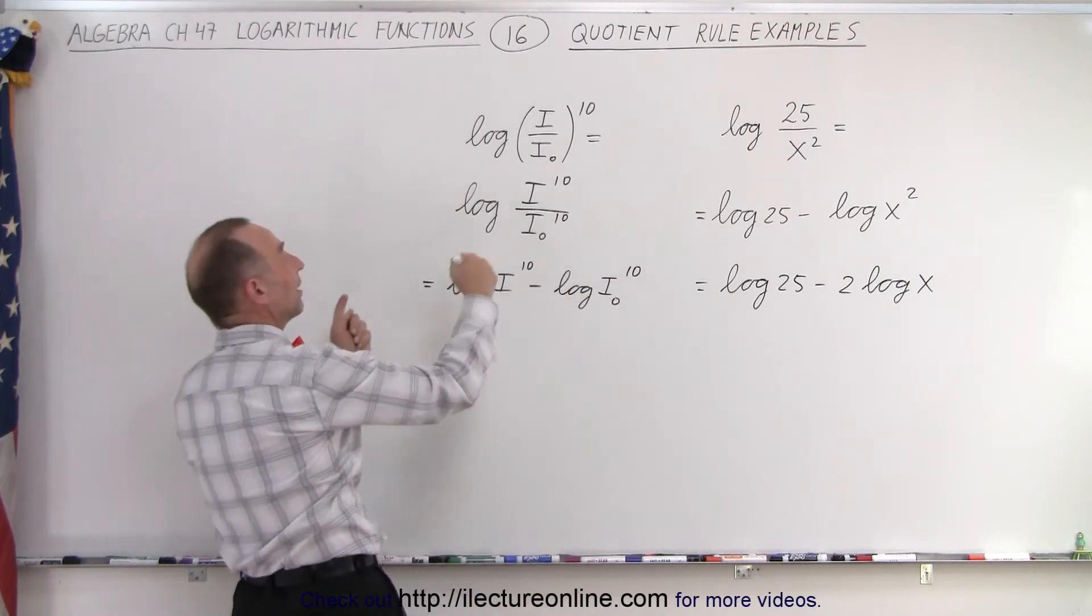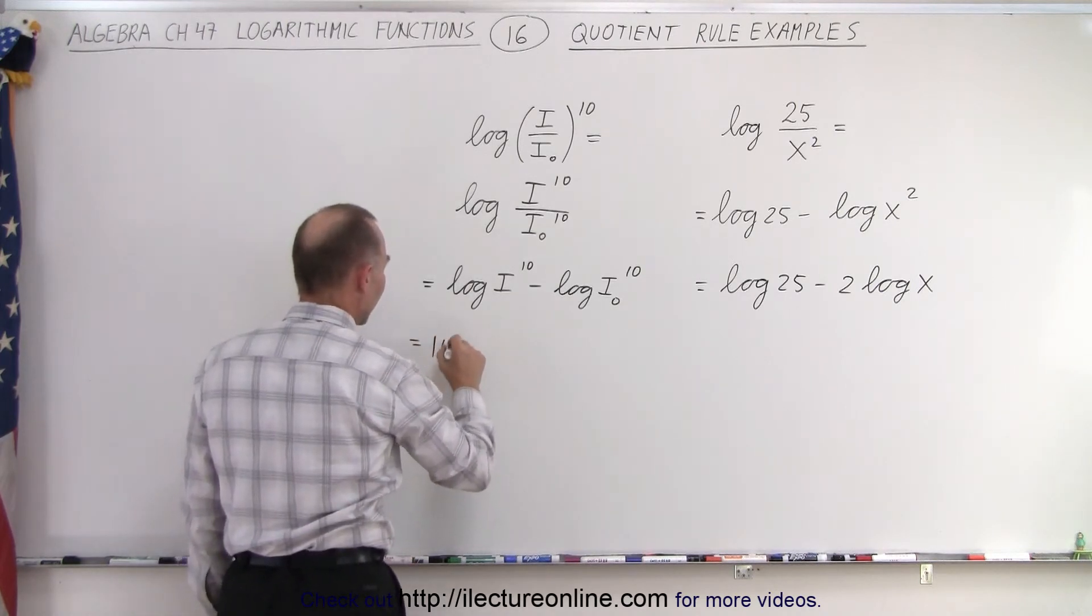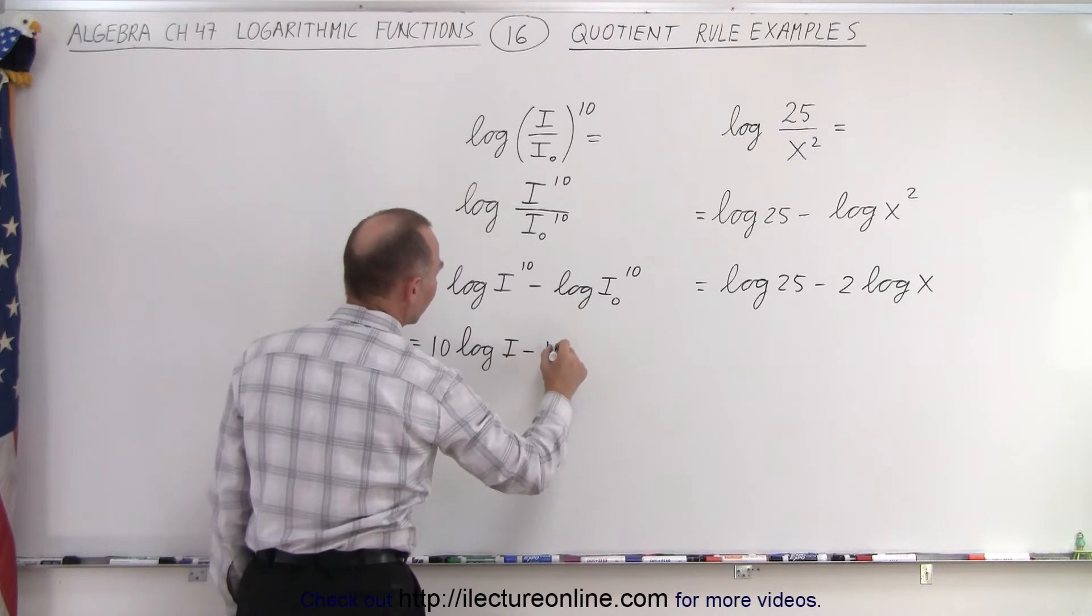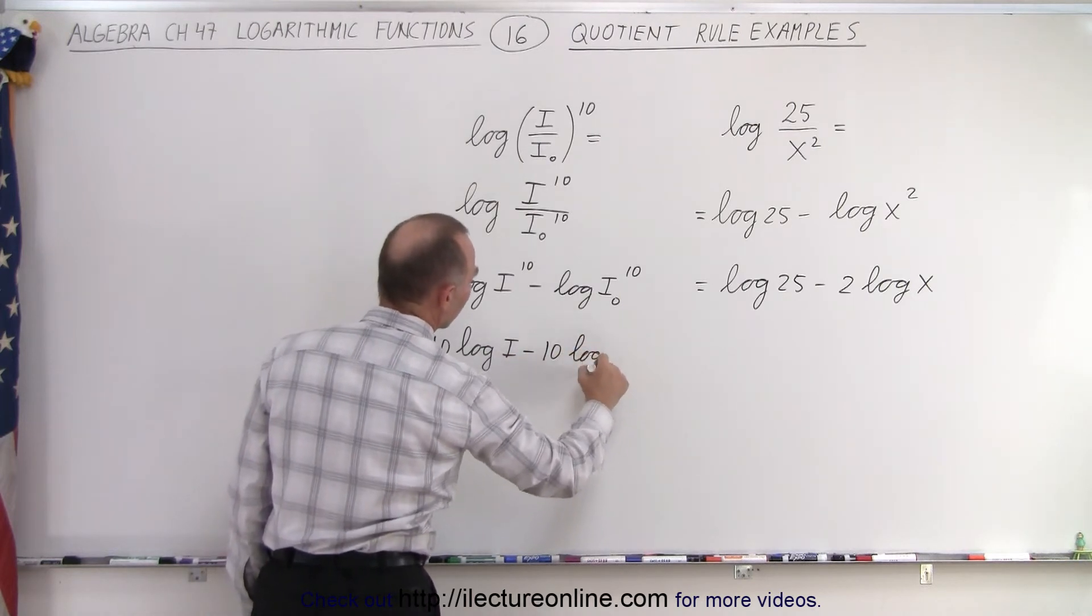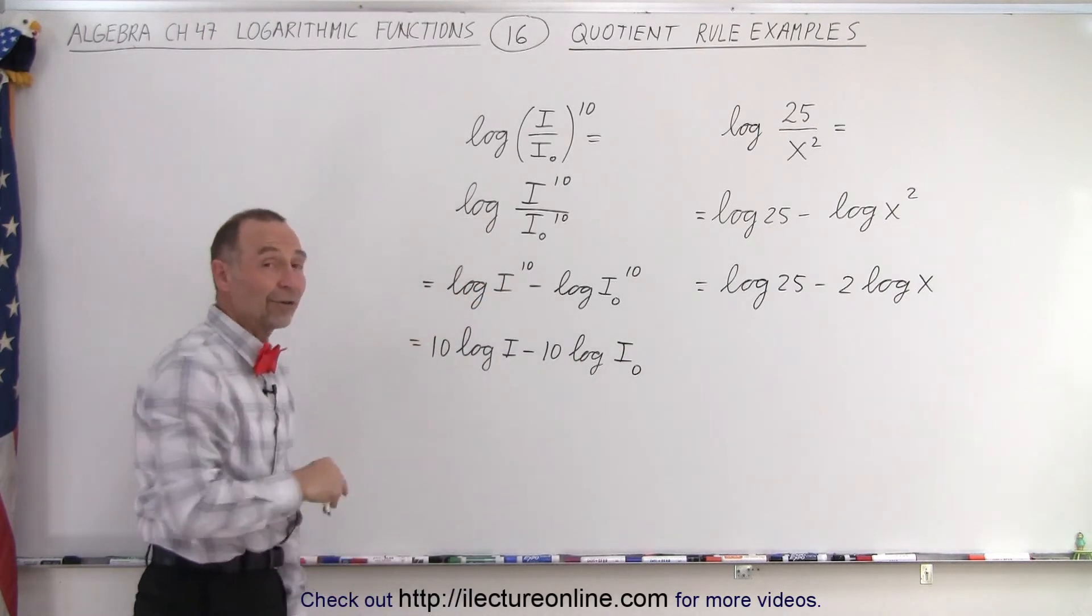And of course, we could move the 10s down in the front. That's called the power rule. So this can be written as 10 times the log of i minus 10 times the log of i sub naught.